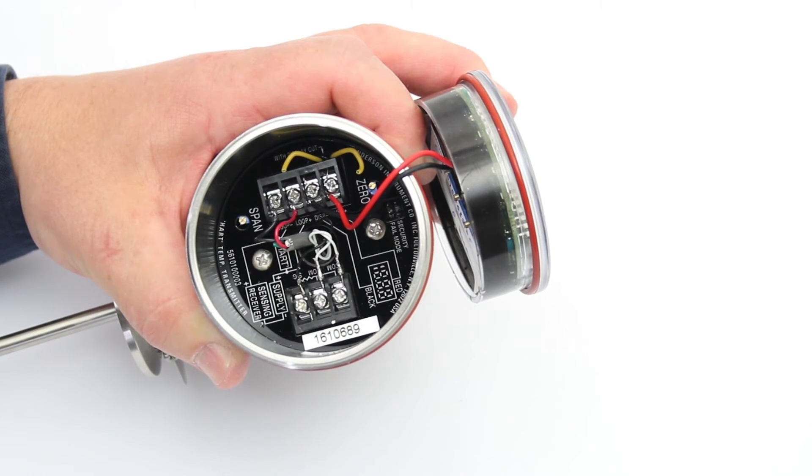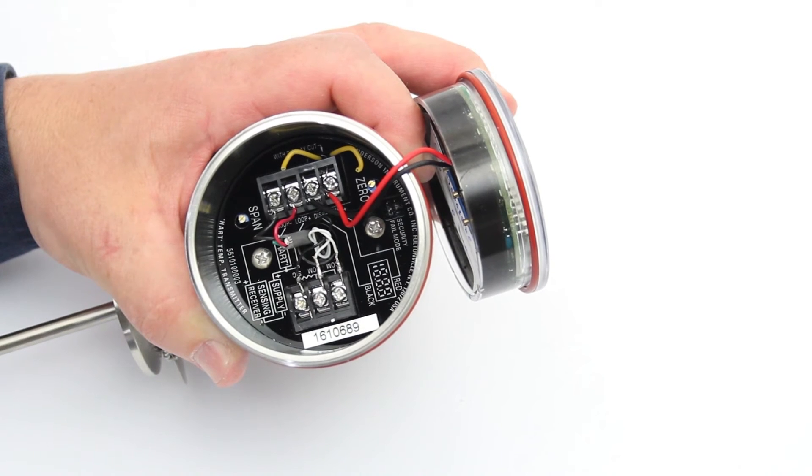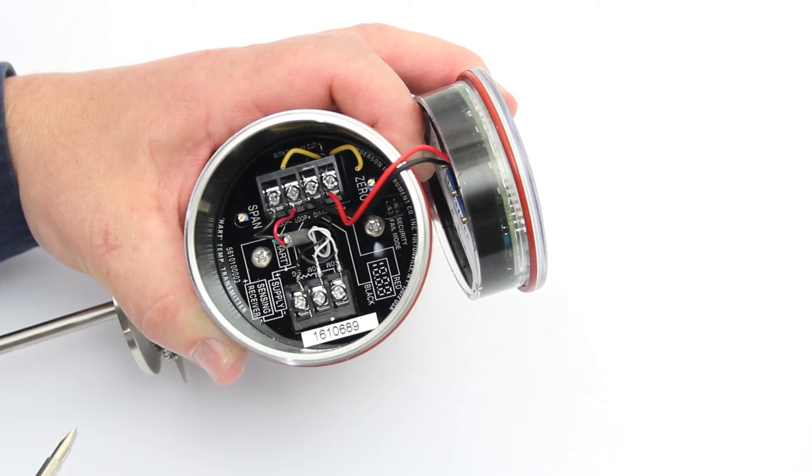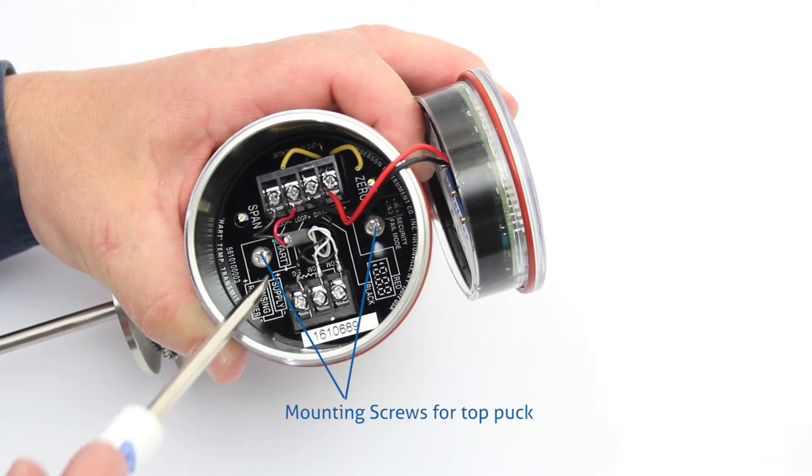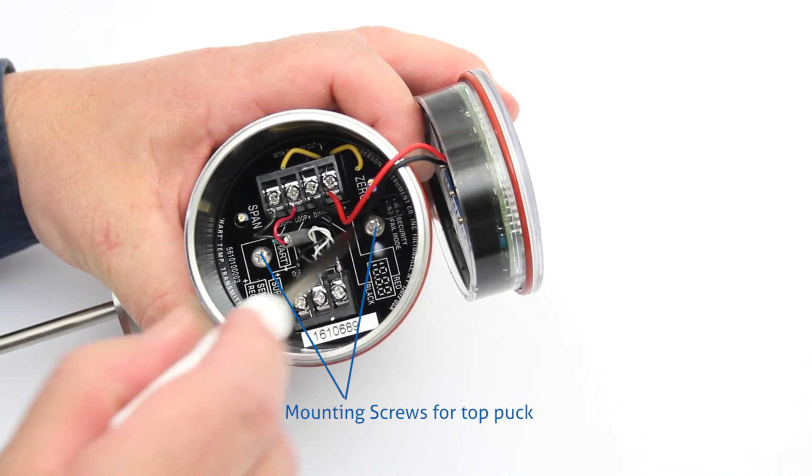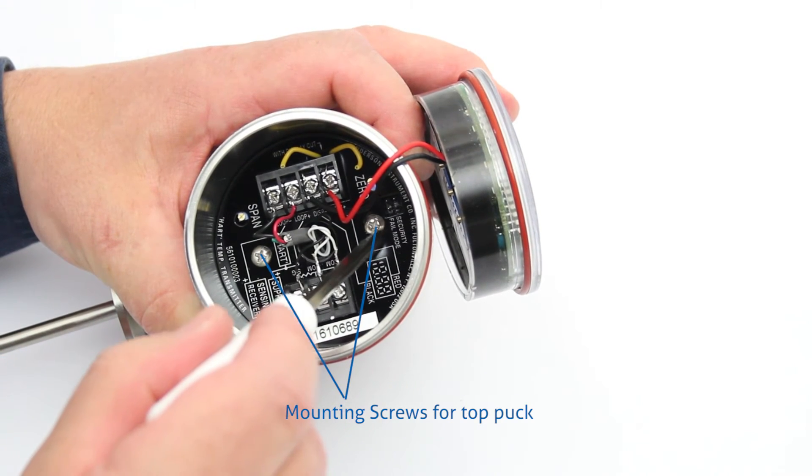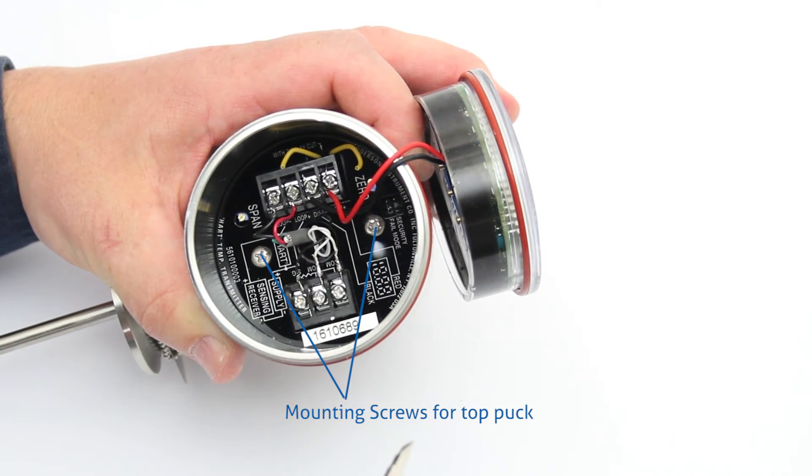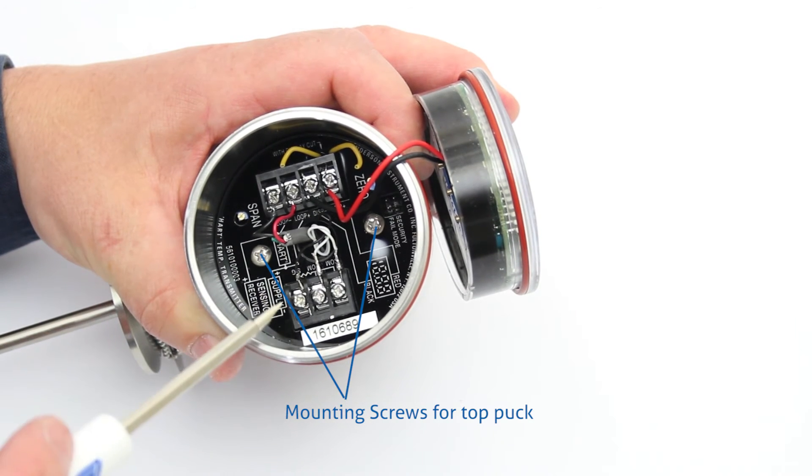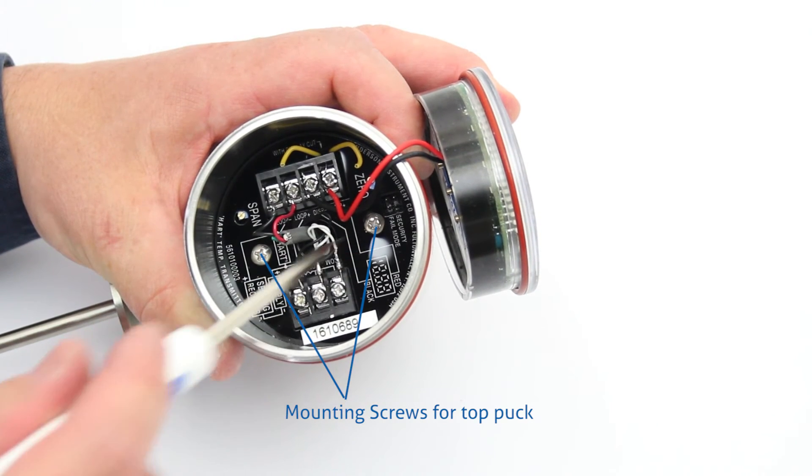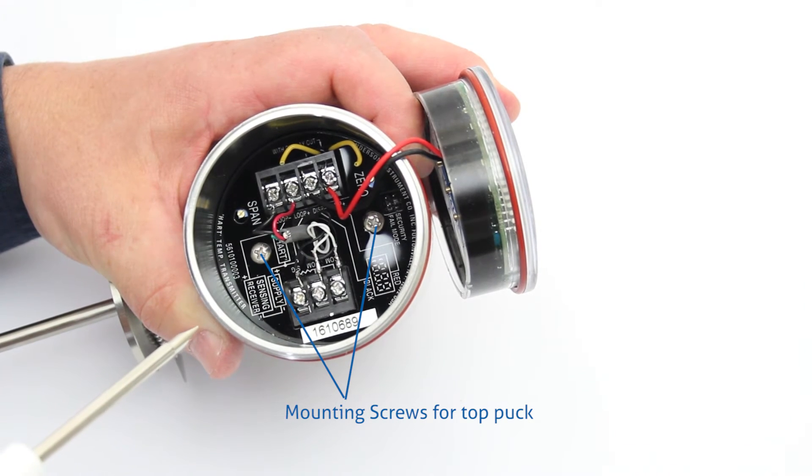Now we are going to look inside the CT8 housing with the top puck installed and look at the wiring that gets connected to the top puck. We have the two screws that hold the top puck in place. You remove those screws when you need to take the top puck out to get access to the bottom puck. And then once the top puck is installed, you carefully install those screws to hold the puck in place.